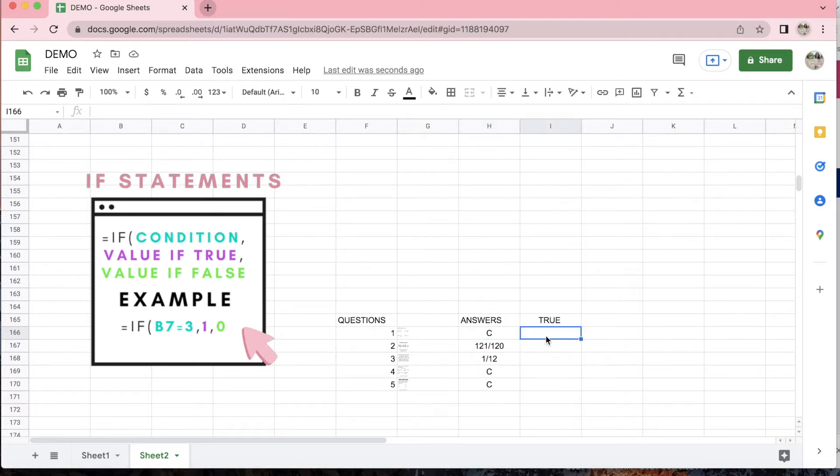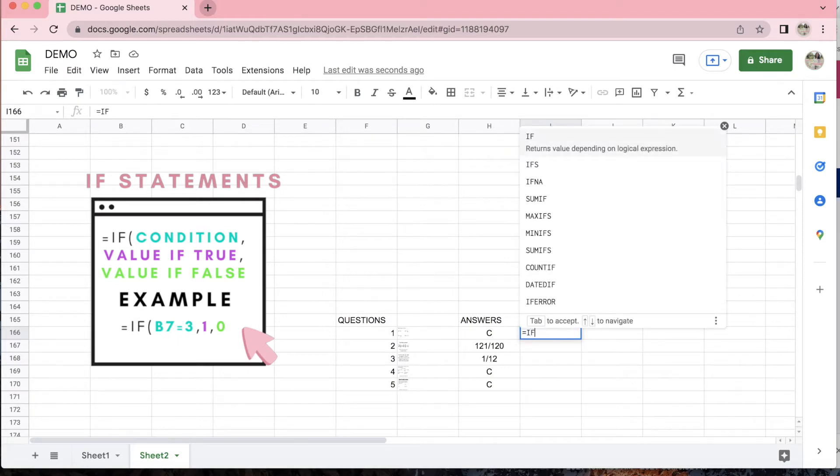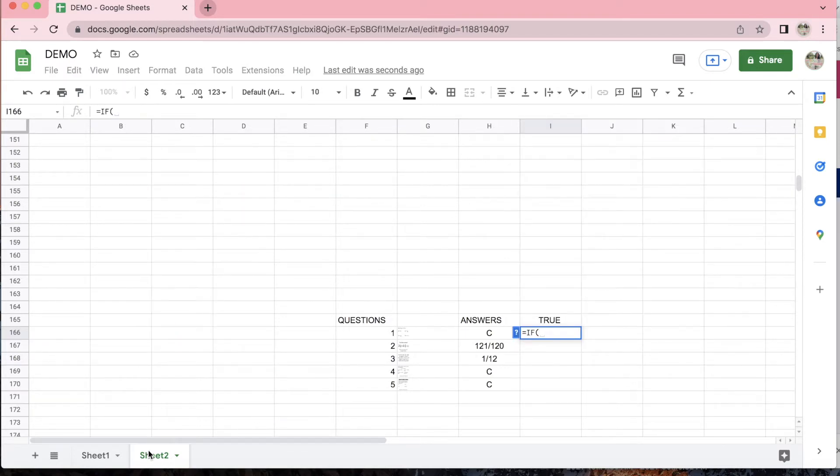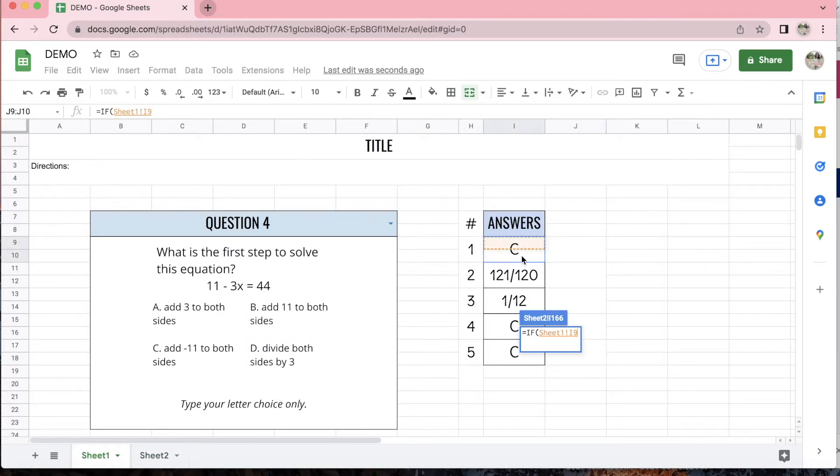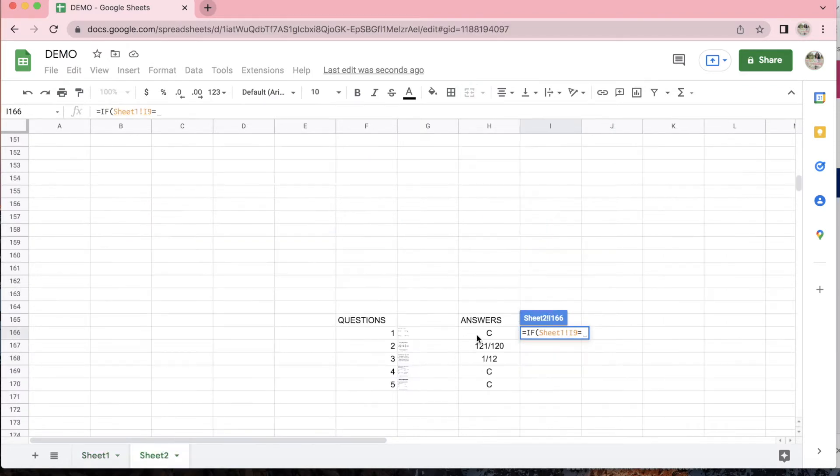So what I'm going to do here is my formula again starts with an equal sign, and the formula is IF, open parentheses, now if this is equal to the answer in the answer key, then this is going to give me a 1. Otherwise it's going to give me a 0. So now you just do enter and that will end that for you.